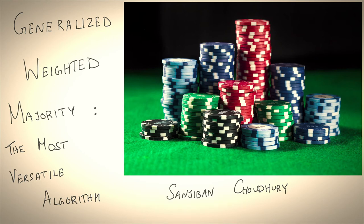Hey everyone, welcome to the third lecture in our series on interactive online learning. I'm Sanjumar Chowdhury, an assistant professor at Cornell and research scientist at Aurora. Today, we will talk about the most versatile algorithm in the universe: generalized weighted majority.